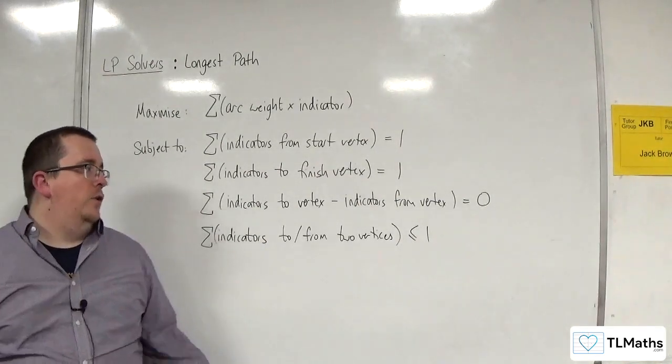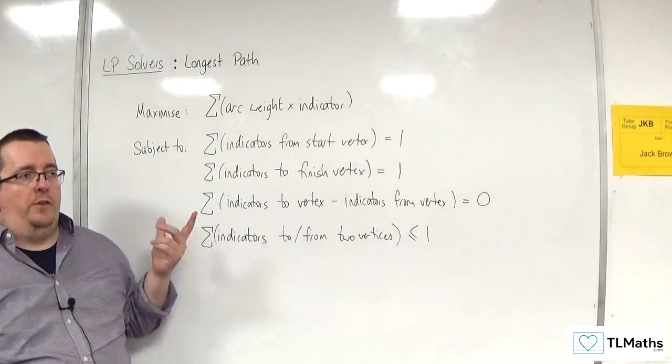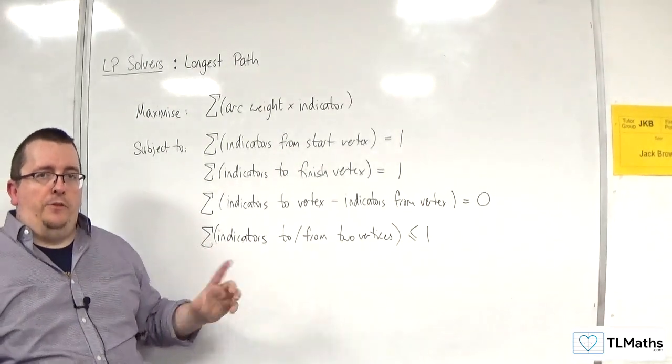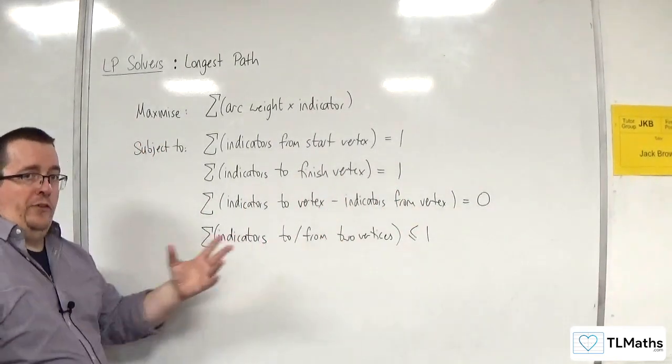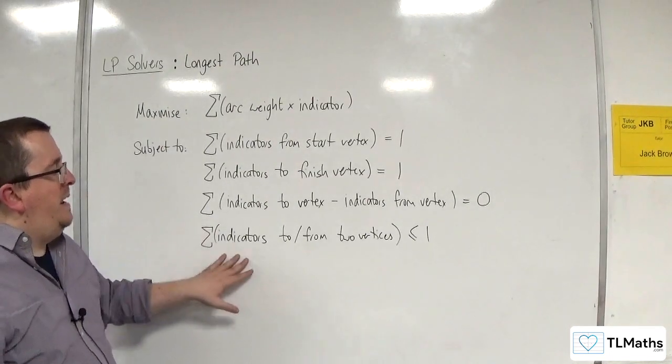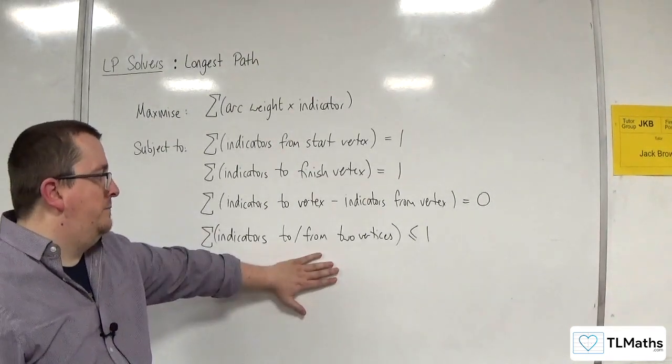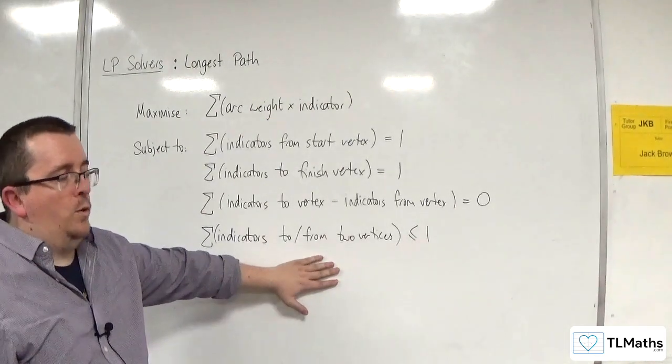So if you've got AB plus BA—if A and B are not start or finish vertices—then you'd have AB plus BA, and that's going to be less than or equal to 1.